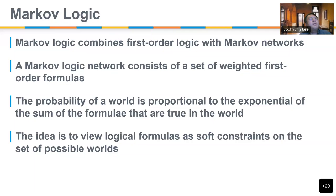You can get the probability of an interpretation — a model or world — that is proportional to the exponential sum of the formulas that are satisfied in that world. Basically, the more formulas are true, the higher the probability becomes. It's a simple idea that tries to turn rigid first-order logic into a soft version, where softness is related to the probabilistic interpretation of the model.